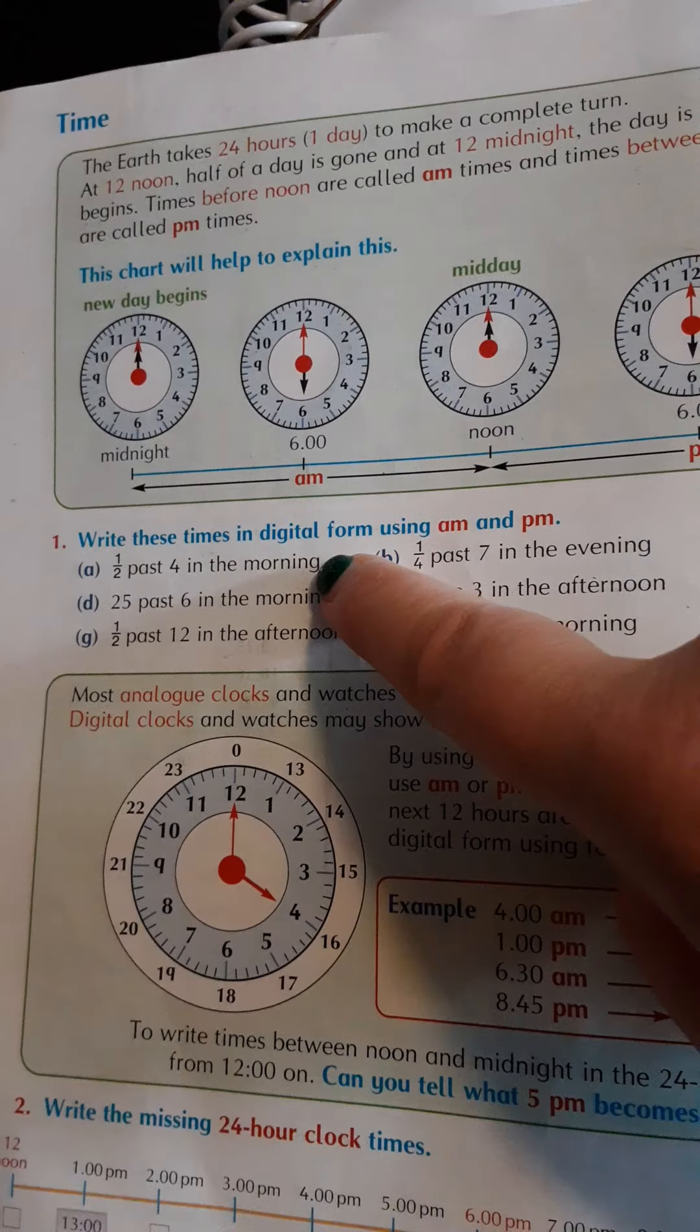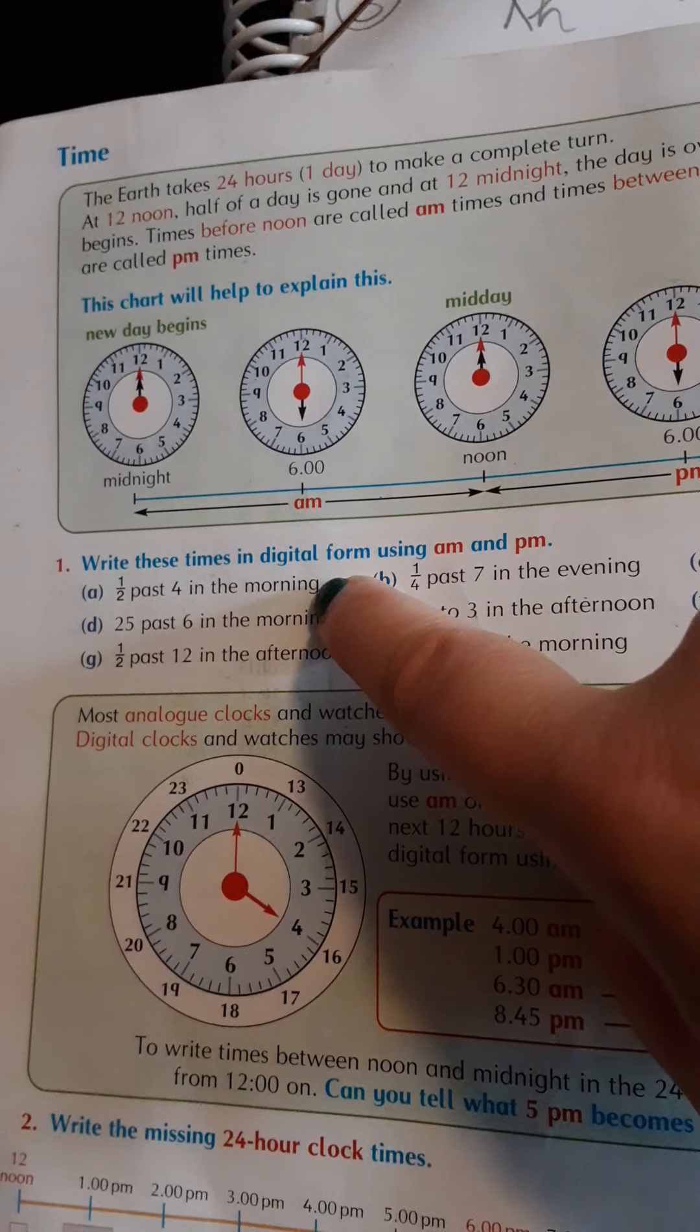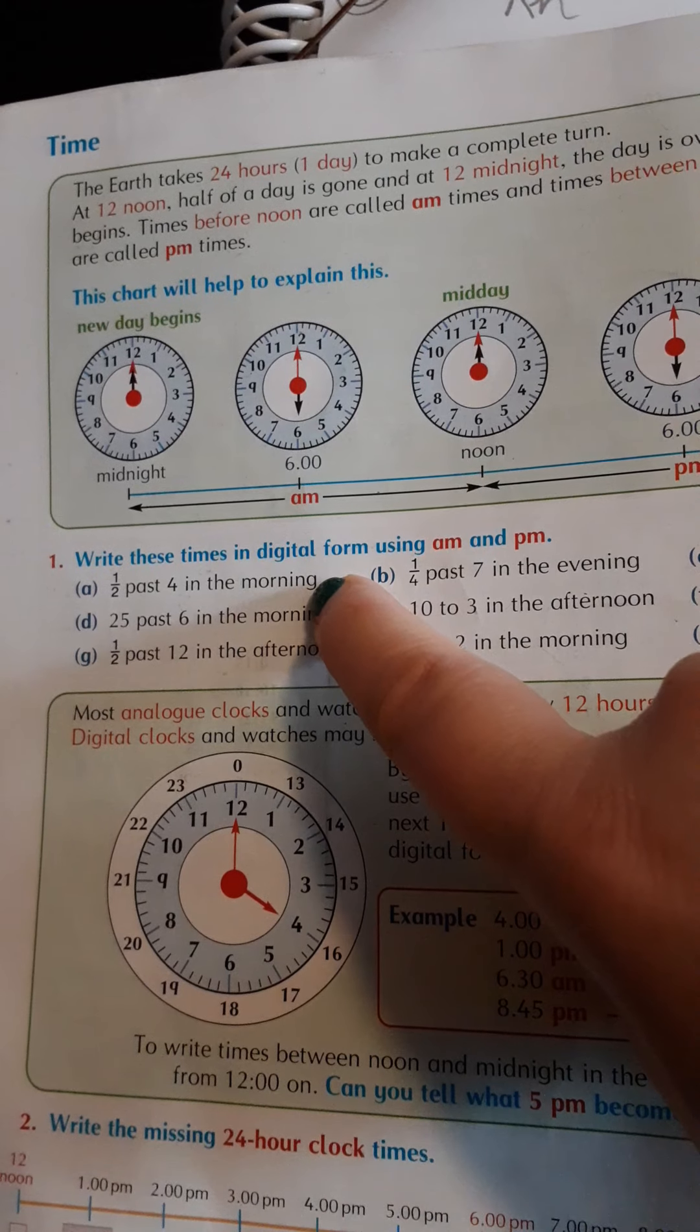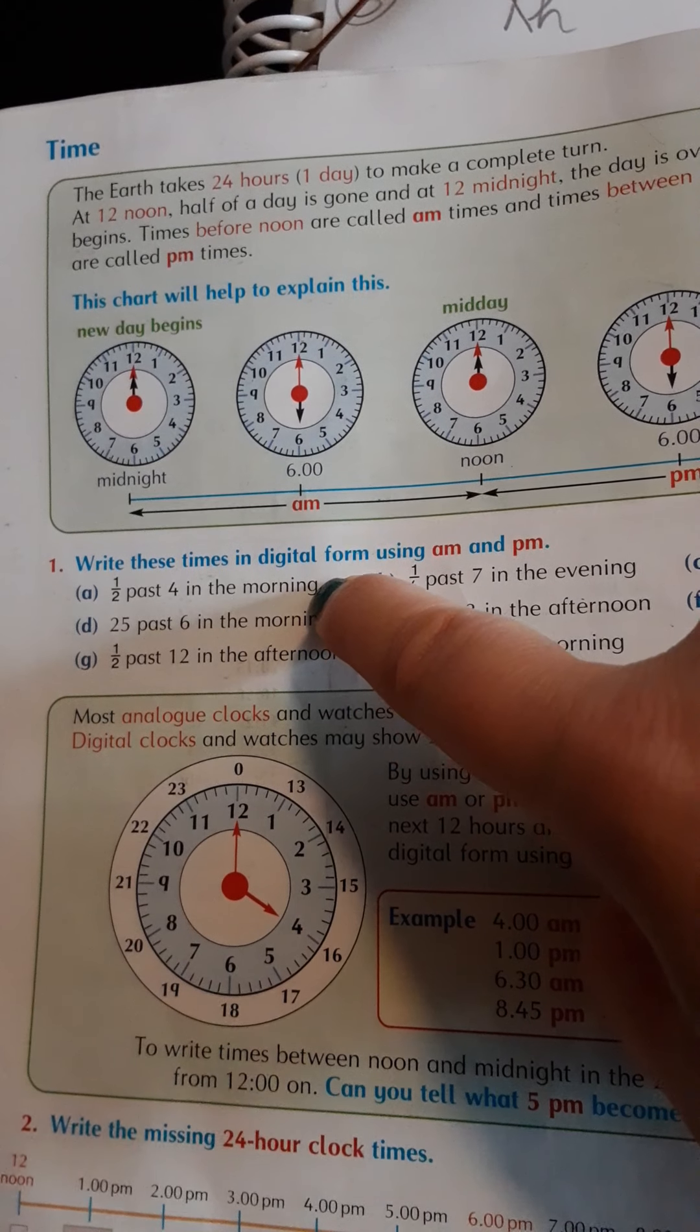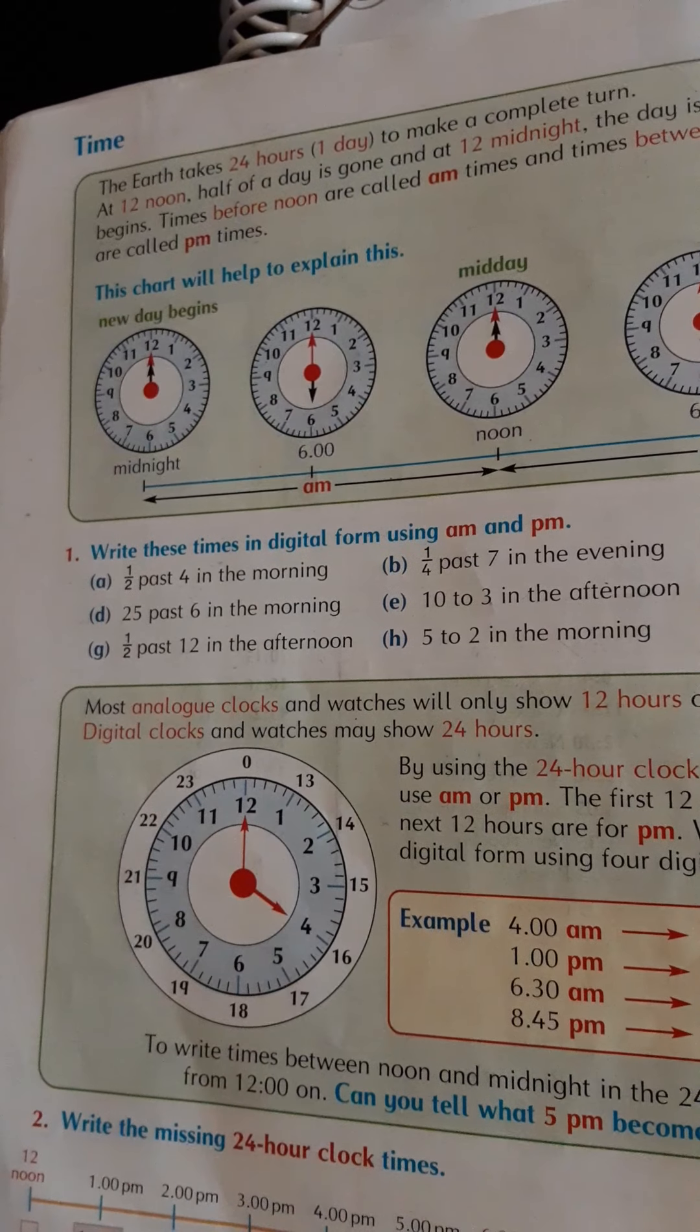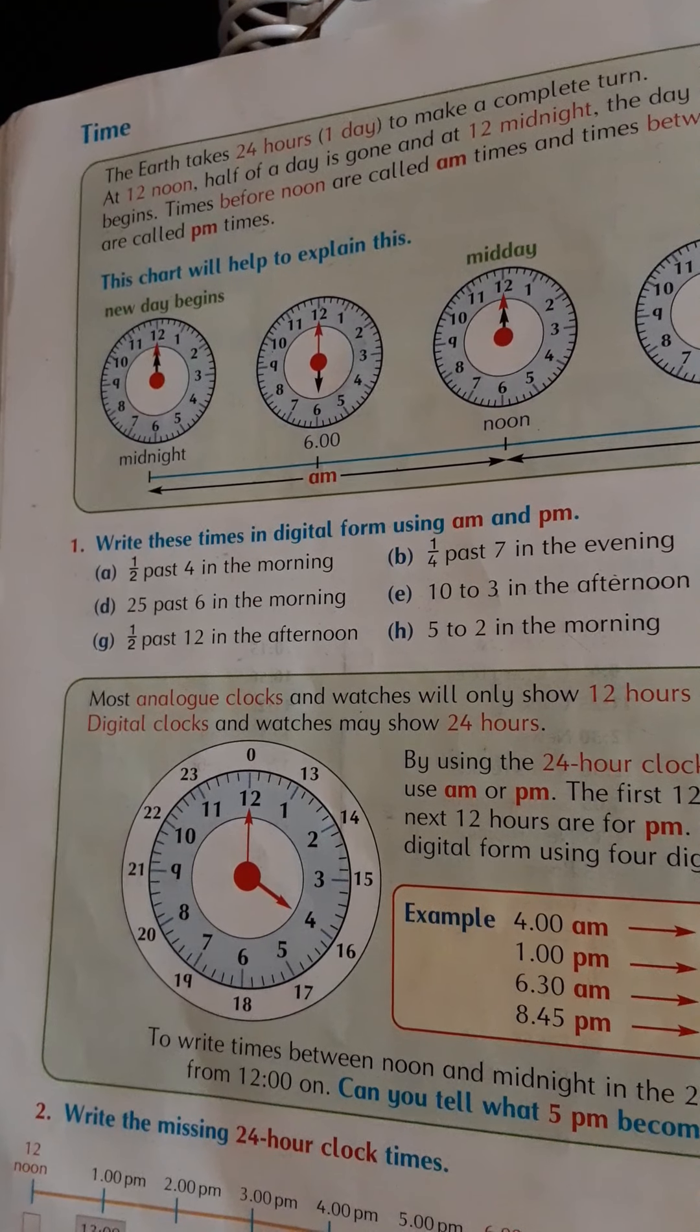So then what you need to do is draw upon your knowledge from what you've learned previously. Half past four - half past is half of an hour past four, so that would be 4:30, and in the morning you know what to add.